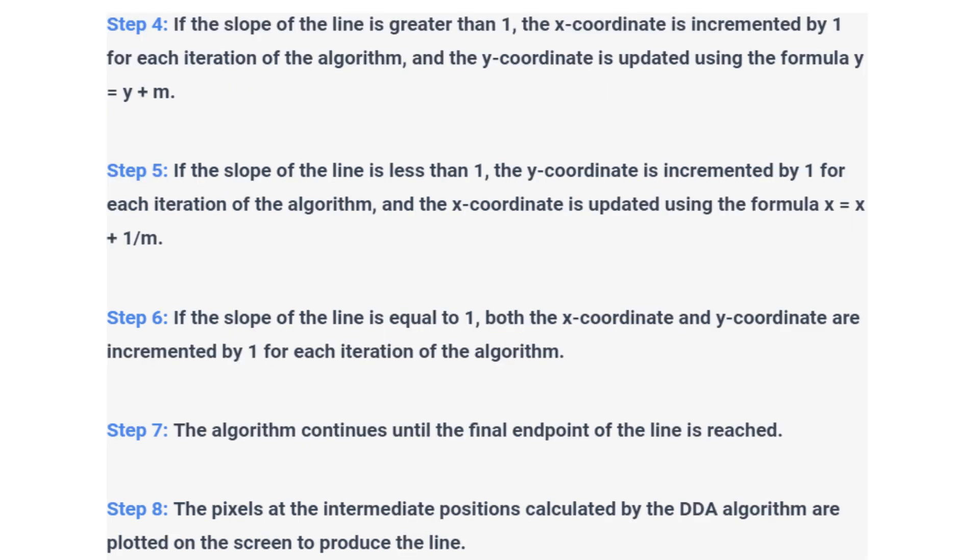Step 4. If the slope of the line is greater than 1, the x coordinate is incremented by 1 for each iteration of the algorithm and the y coordinate is updated using the formula y equals y plus m.